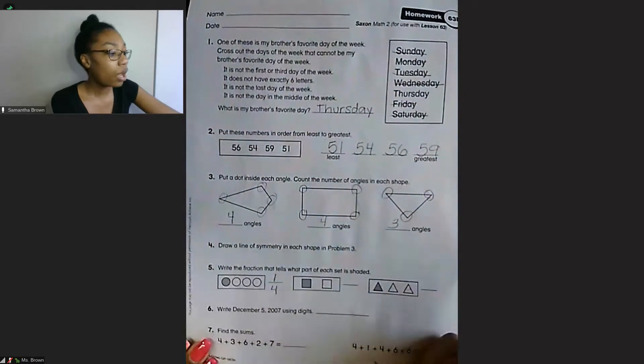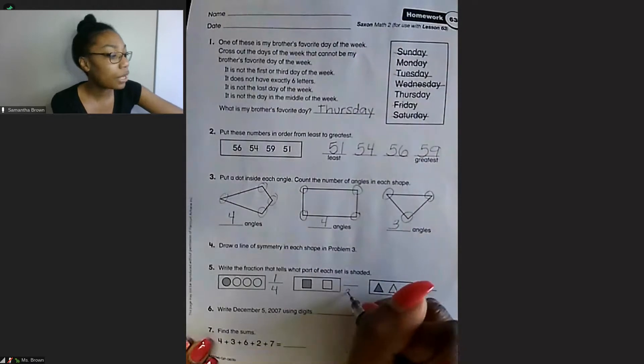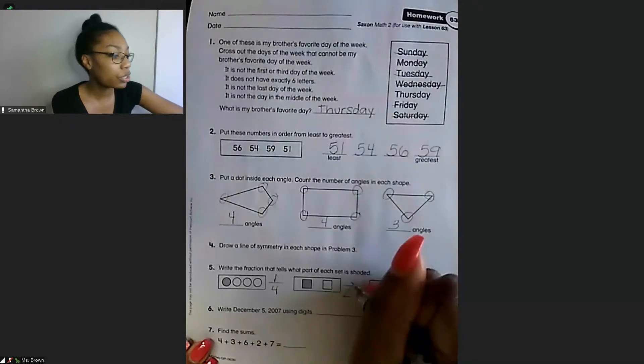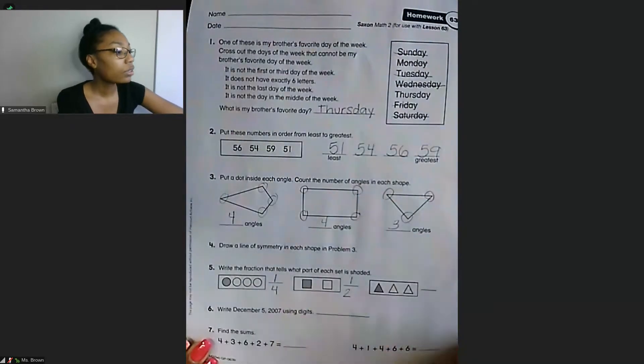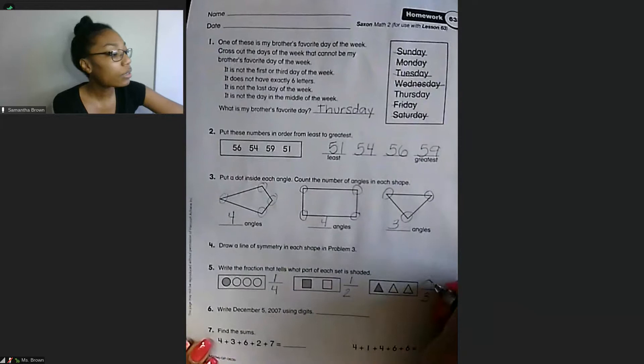Next one, we have one, two pieces in the set total, our denominator, and then we have one piece that is shaded, which is our numerator. One, two, three pieces in our set total. We have one piece that is shaded.